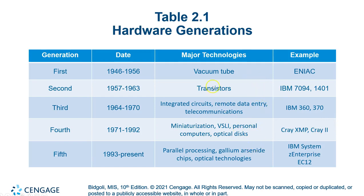Early computers took whole rooms. Now in the fifth generation, parallel processing means two, three, or four chips are all working at the same time — like two or three motors on the back of your boat or airplane. And a lot of things are happening out in the cloud now.